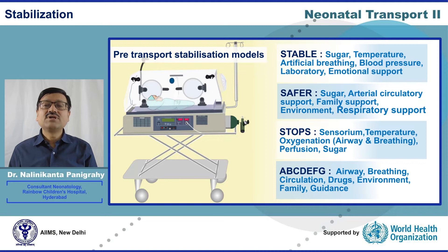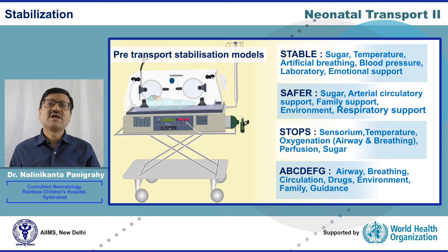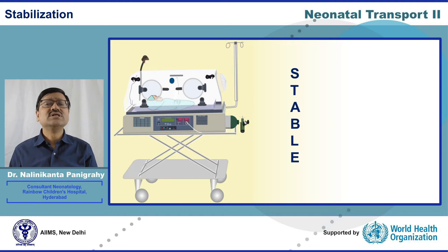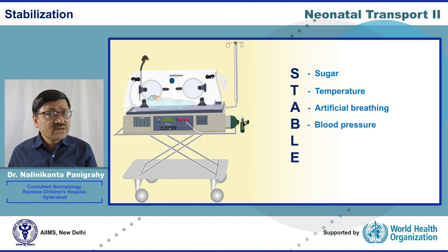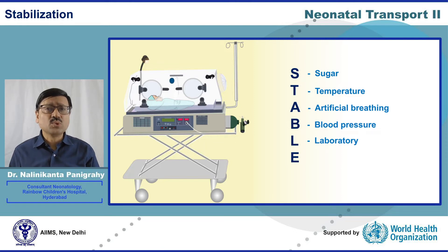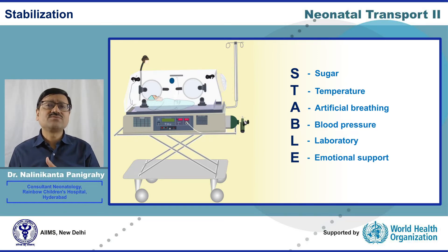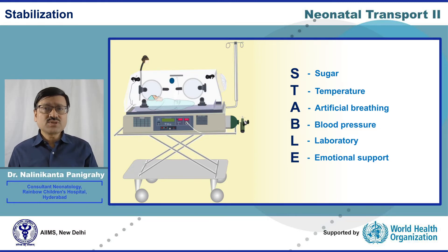To keep it simple, before initiating transport we should address airway, breathing, and circulation — stabilization is very, very key. We can follow the STABLE protocol: S for Sugar, T for Temperature, A for Artificial breathing, B for Blood pressure, L for Laboratory investigations including blood grouping and sugar, and E for Emotional support. When transferring a baby from one facility to another, the family is also moving to a new environment, making emotional support a very important step.